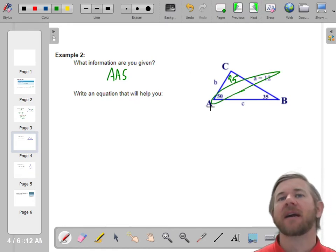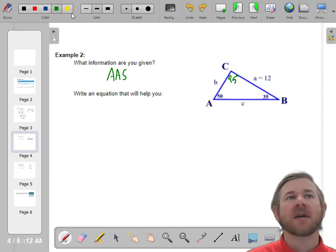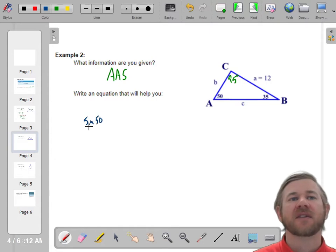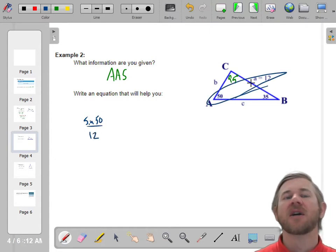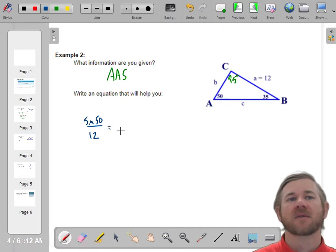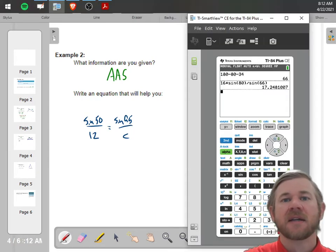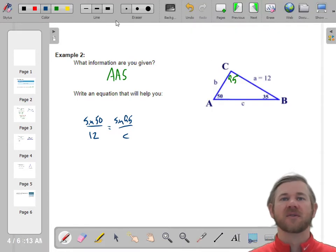Now I have an angle side pair right there and I'm trying to find this. So I'm going to use, well, actually, I'm trying to find everything. So let's go ahead and set up a proportion. We'll find C first. The sine of 50 over 12. This is the angle side pair that I know. So I have to use that one. Equals the sine of 95 over C. So to solve that, you cross multiply 12 times the sine of 95 divided by the sine of 50, you get 15.61. So C is 15.61.